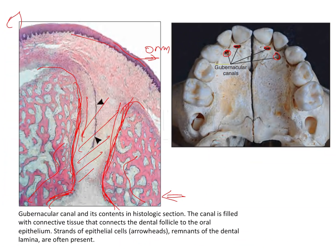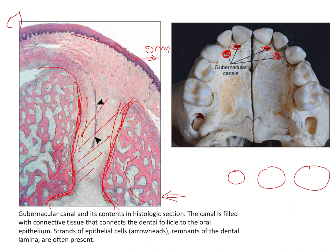These gubernacular canals are characteristic of those deciduous teeth that will have a permanent successor, such as incisors — the deciduous incisors have permanent incisors as successors. During eruption of the permanent teeth, osteoclastic activity starts taking place around these canals, causing them to keep enlarging. The permanent tooth ultimately emerges out through these canals. That is why they are important.